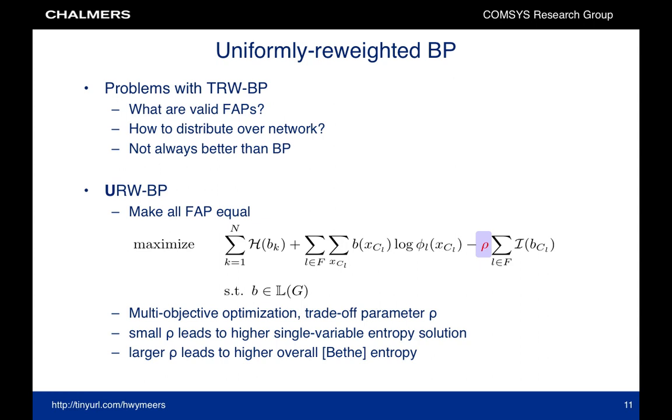To address this problem, we propose uniformly-weighted belief propagation, where all factor appearance probabilities are the same, equal to rho between 0 and 1. The motivation for this choice is that in many problems of interest, the factor graph has a great deal of symmetry, such that a uniform factor appearance probability would be optimal. Now note that we can interpret the optimization problem as a multi-objective problem by the trade-off parameter rho. And as we reduce rho from 1 to 0, we put more emphasis on maximizing the single variable entropies, which was in fact our original objective, so that the beliefs do not become overconfident.